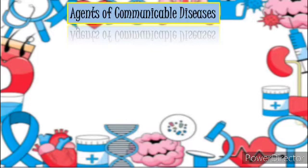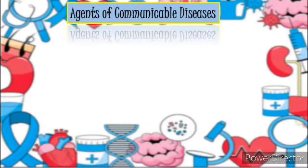Communicable diseases spread from one person to another or from an animal like a dog to a person. The spread often happens via airborne viruses or bacteria, but also through blood or other bodily fluids. The terms infectious and contagious are also used to describe communicable diseases. These diseases are spread through respiratory, gastrointestinal, dermatologic, and blood-borne routes.